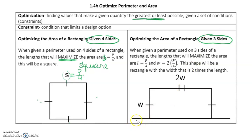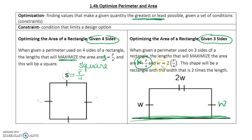Now, optimizing a rectangle with only three sides — this applies when, say, one side is a house, river, or hedge, and we don't need to fence all four sides. We still use the same formula: the width is P ÷ 4. The length is two times that — so two times one-quarter is one-half. The shape is a rectangle where the length is two times the width.